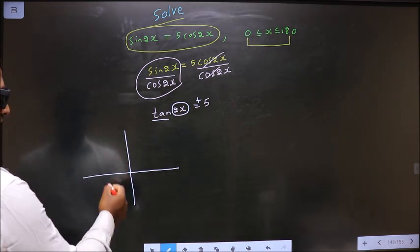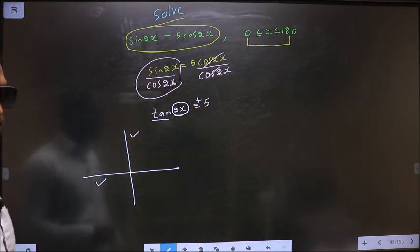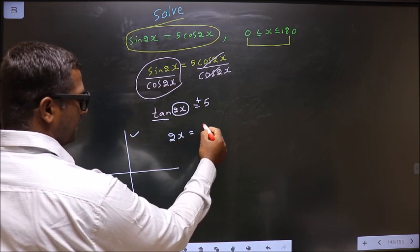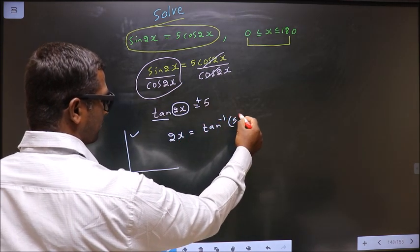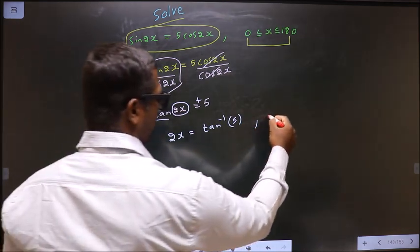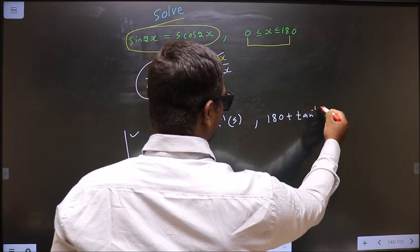It is all silver tea cups. It is positive in the first and it is positive in the third. To get an angle in the third, we do 180 plus tan inverse 5.